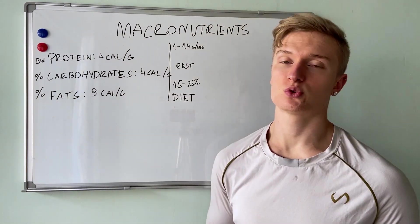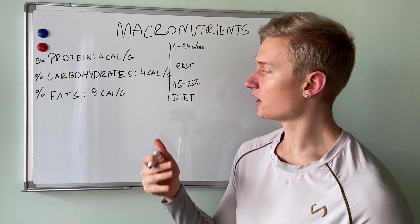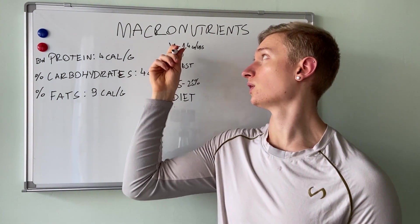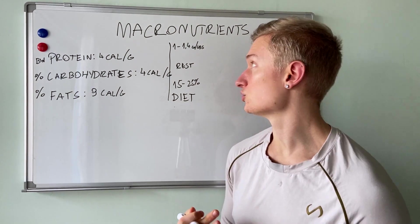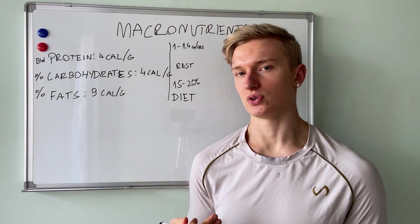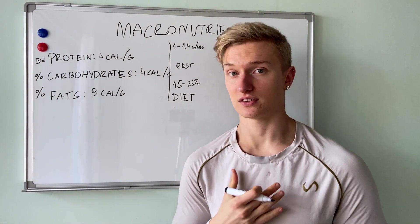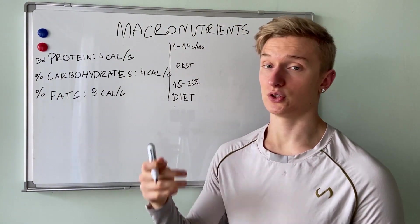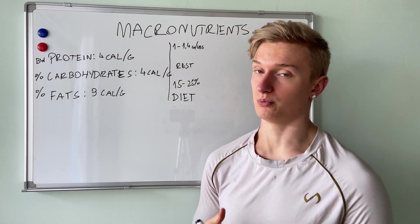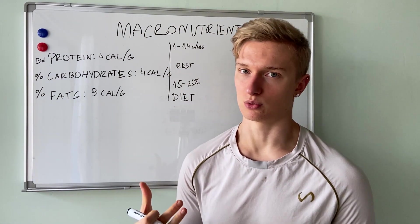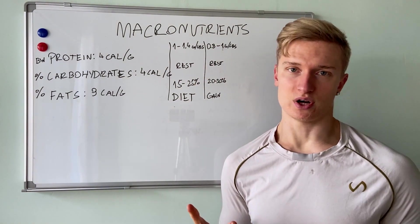When you're dieting, 15 to 25 percent of your total daily calorie intake should come from fats, and 1 to 1.4 grams of protein per pound of body weight — you simply need to increase your proteins a little bit more when dieting, just to preserve lean muscle tissue. The rest of the calories are going to go into carbohydrates, which makes up the majority — like 50 percent or more.